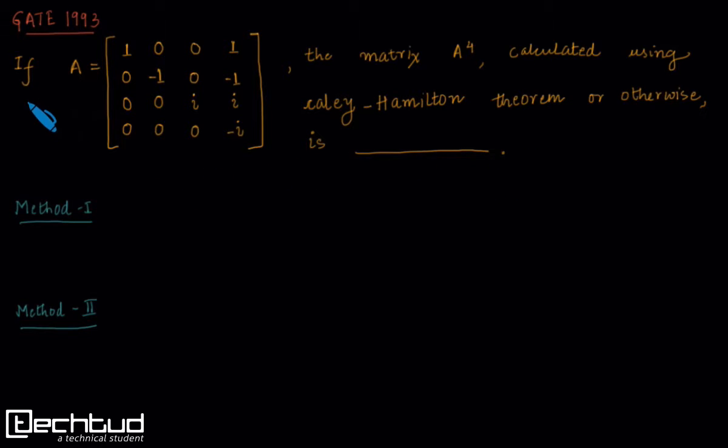This question has been asked in GATE 1993. We are given a 4 by 4 matrix A, and we need to find out the matrix A^4 by using Cayley-Hamilton theorem or otherwise.